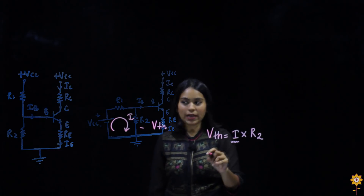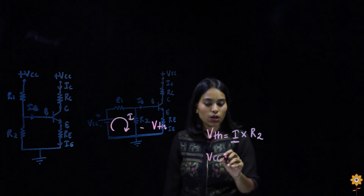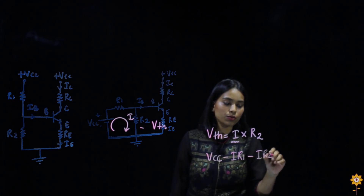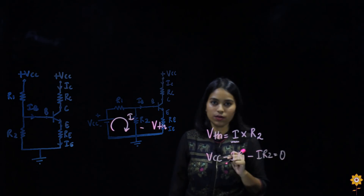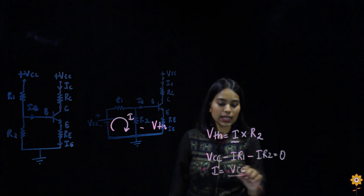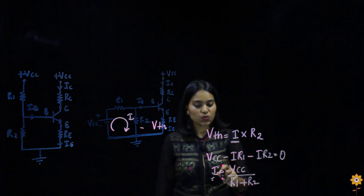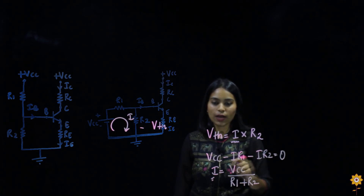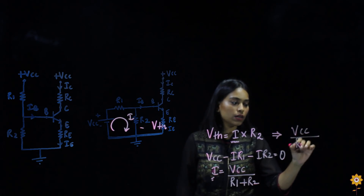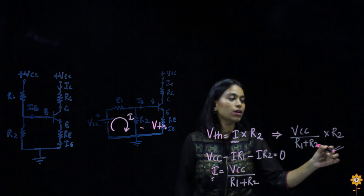Applying KVL, the equation is: Vcc minus I·R1 minus I·R2 equals 0. Solving for I: I equals Vcc divided by R1 plus R2. Substituting into the Vth equation, Vth equals Vcc divided by R1 plus R2, multiplied by R2. So this is Vth.